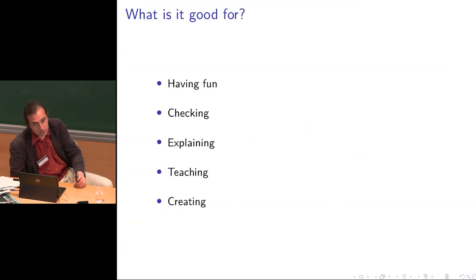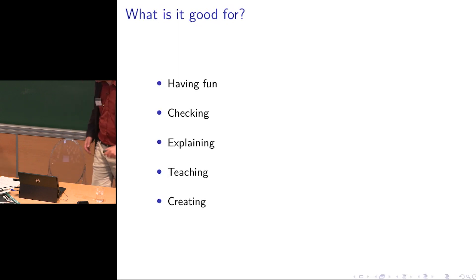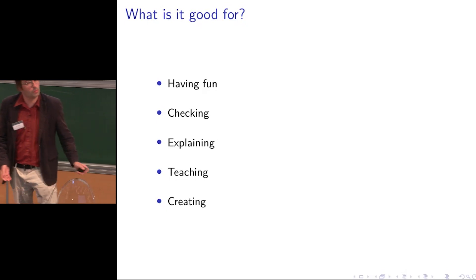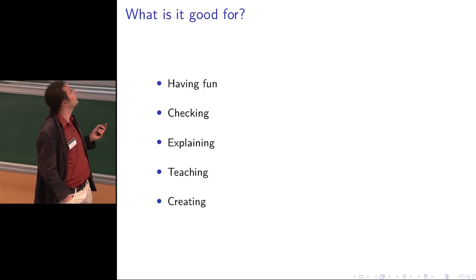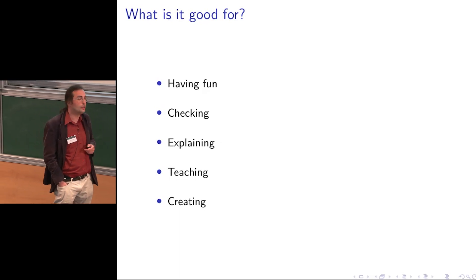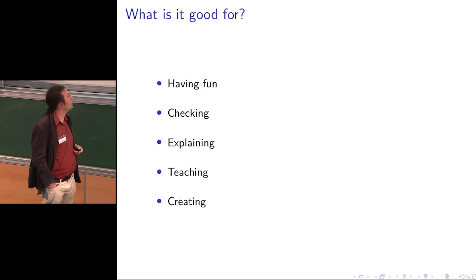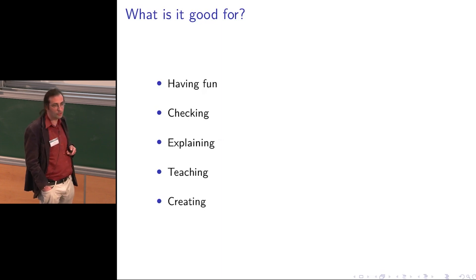So what is it good for? We are having fun doing that — which is of course what we always do. As researchers we have to rationalize and explain to people why it's important. When we rationalize, we have a couple of different motivations. I will discuss four motivations: checking mathematics, explaining mathematics, teaching how to do mathematics, and creating new mathematics.